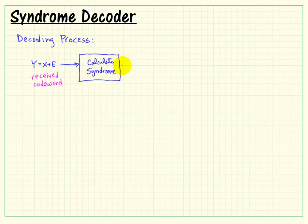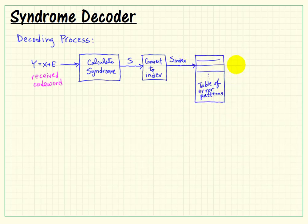So the decoding process begins with the received codeword y, which is the transmitted codeword plus the error. We calculate its syndrome s, convert that syndrome, which is a binary pattern, into a numerical equivalent. We can interpret it as an unsigned integer, to serve as an index into a table of error patterns. I'll call this e-hat, since this is our best guess as to the error pattern associated with each different syndrome.